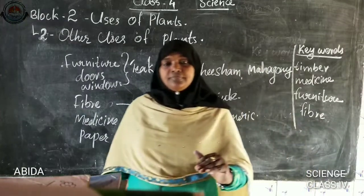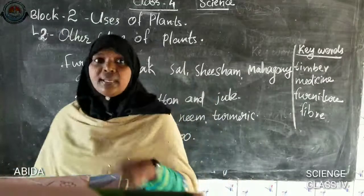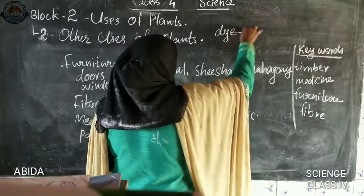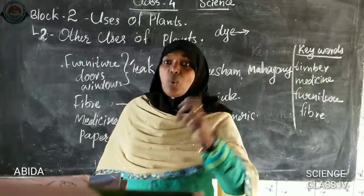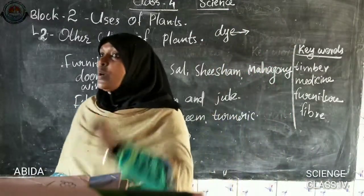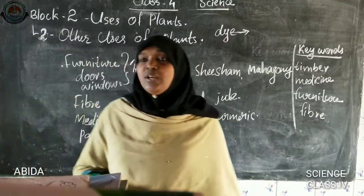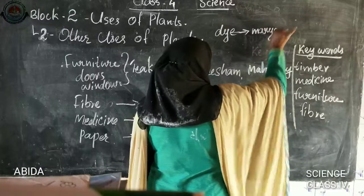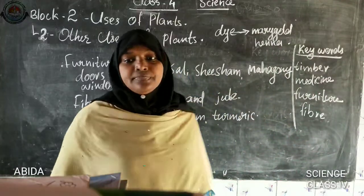Some plants or flowers are used as dye. What do you mean by dye? To color clothes or our hair — we make it into a solution and color with it. Which plants give dye? Marigold and henna.